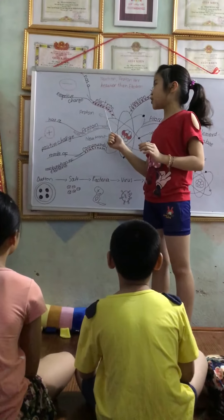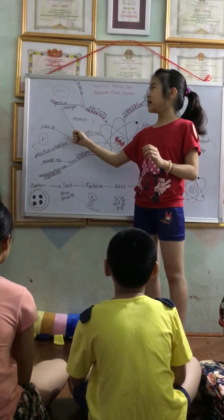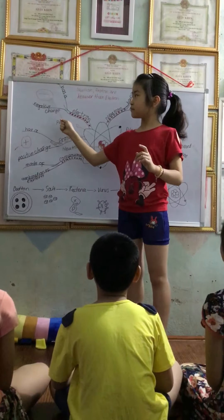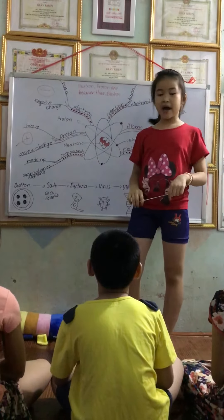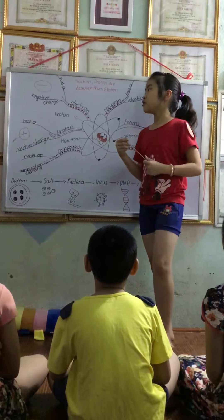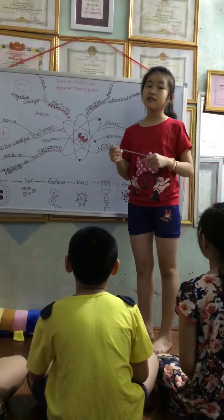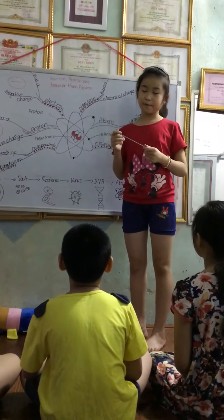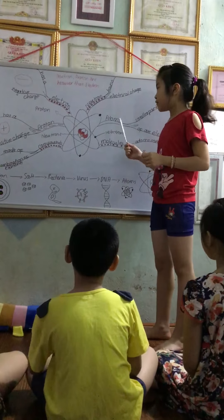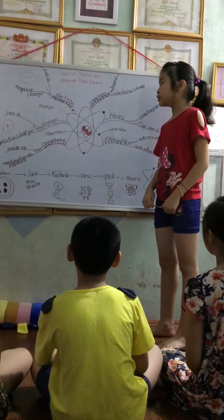And electron — it has a negative charge, the minus. In math it has minus, but in science we call it negative. So next: that is electron, neutron, and proton.